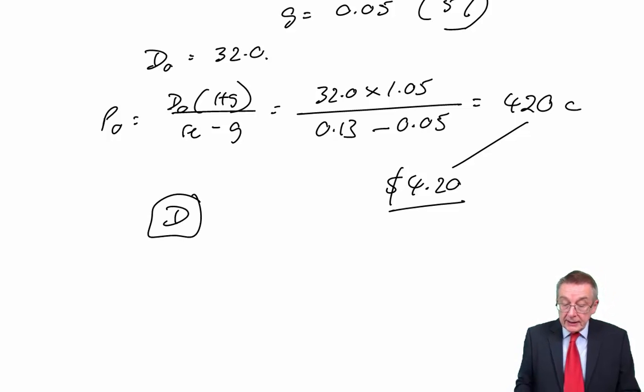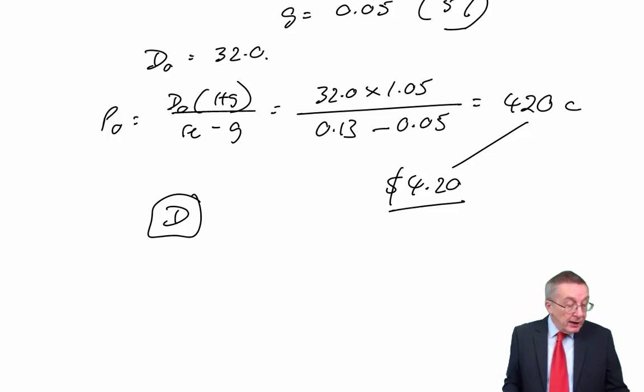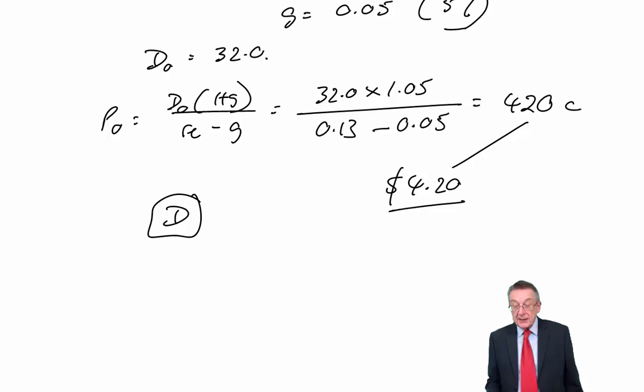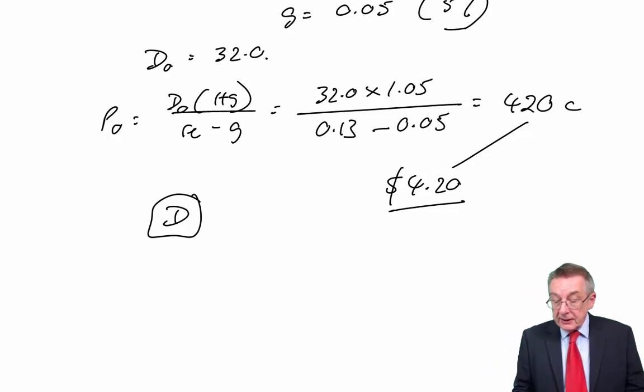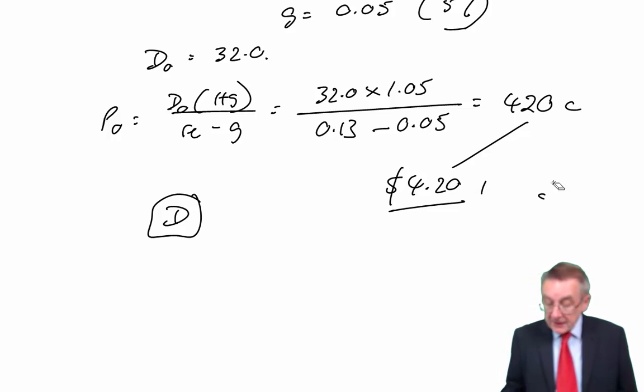And remember, I did say it, but P0 is the ex-dividend price. Irrelevant here, but if they had asked you for a cum-div price, that would be the price assuming we were about to pay the current dividend, it would be 32 cents higher. But here, irrelevant.